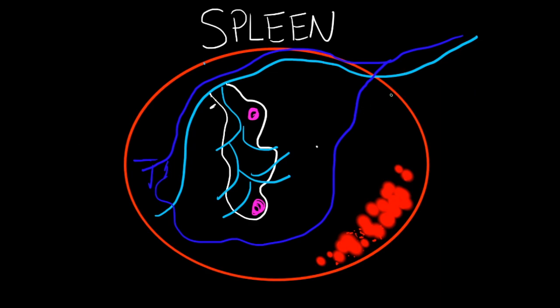It's in the left quadrant of your abdominal cavity, in your upper abdominal cavity, where your ribs are in your upper left chest or stomach area. The spleen is surrounded by a capsule. This red thing is our capsule here.